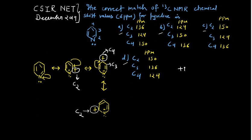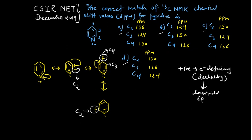A positive charge indicates electron deficiency. When electron deficiency is present at a particular position, there must be deshielding, because electrons generally shield nuclei. When electrons are not there, shielding does not occur — deshielding is happening. Whenever deshielding occurs, you have a downfield chemical shift, meaning a higher delta ppm value. So wherever you have a positive charge on a carbon, it means deshielding and a higher chemical shift.